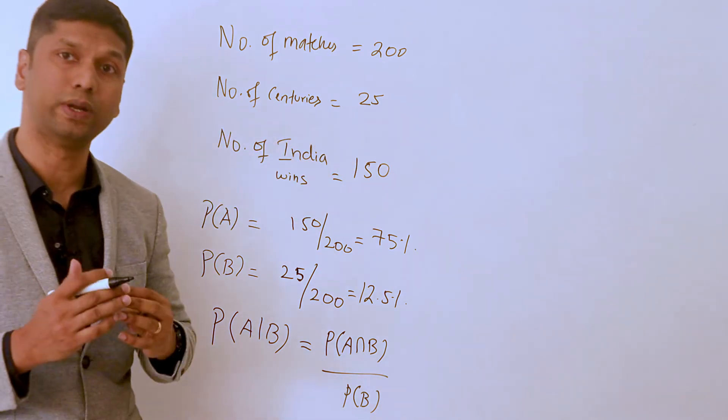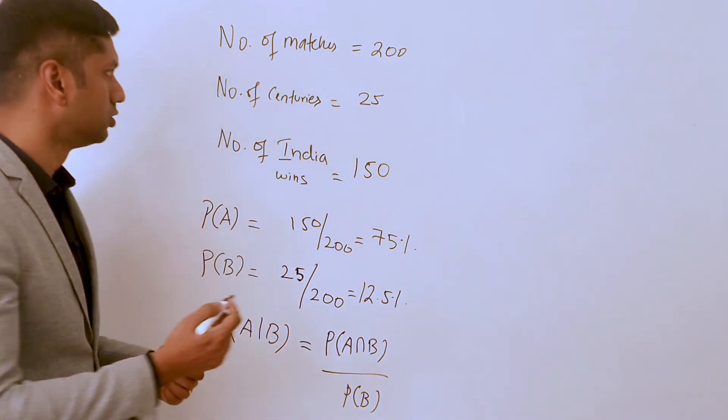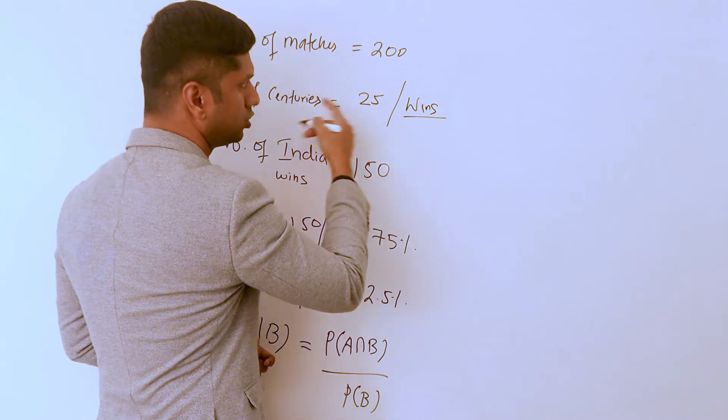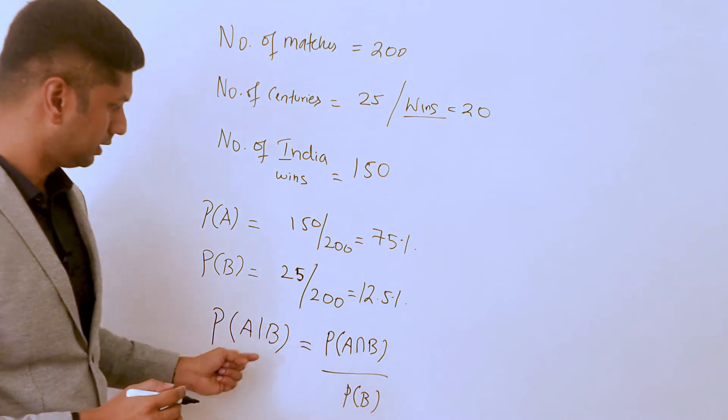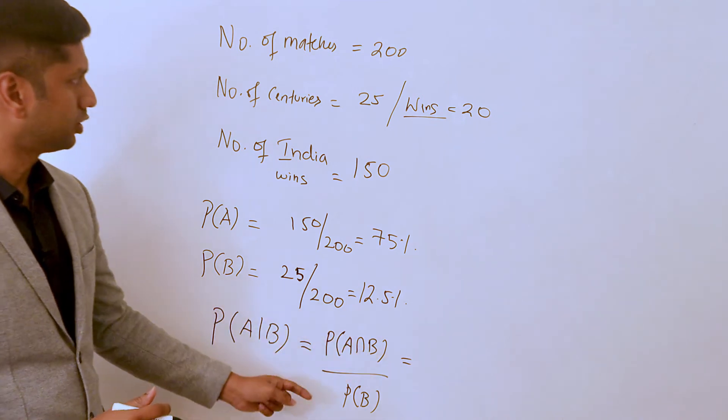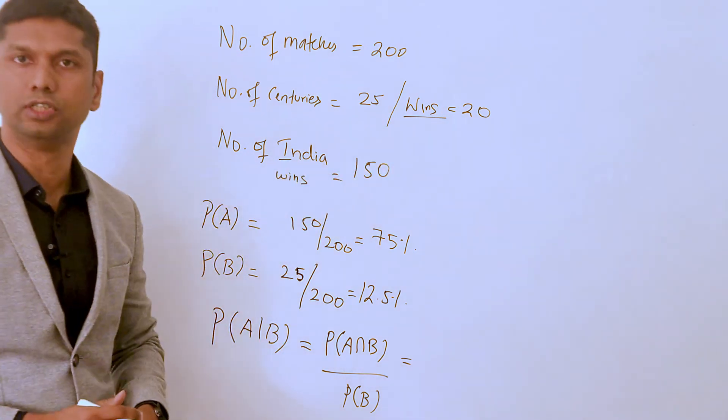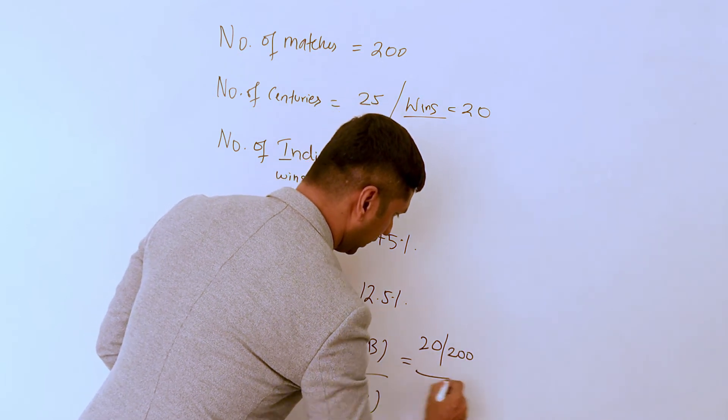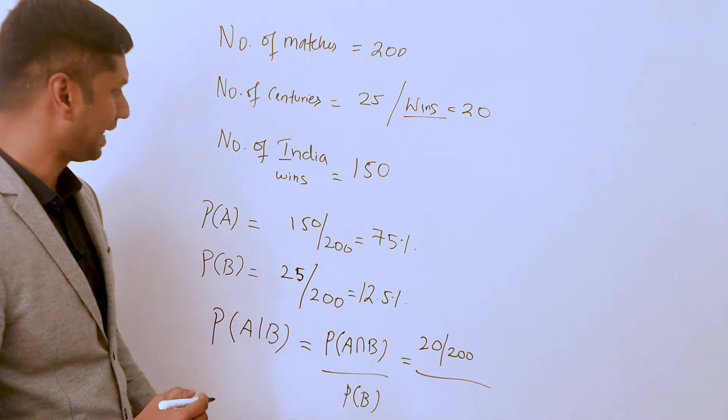Here in this example, we know he has hit 25 centuries, but when he has hit it, how many times did India win? Let's say that number is 20. So the probability of A intersection B - winning and scoring a century - is 20 out of 200.